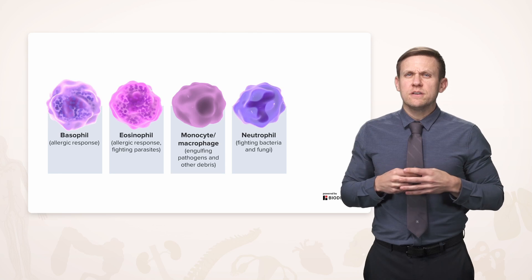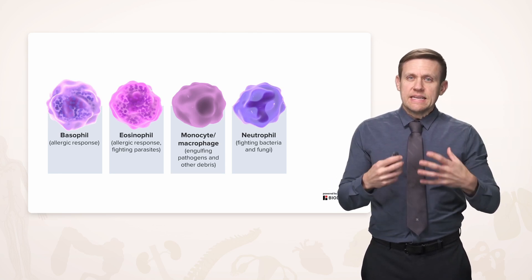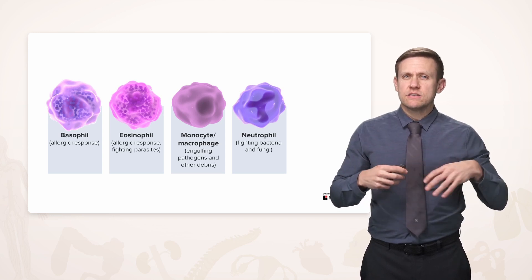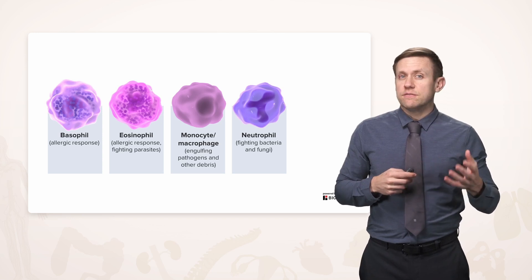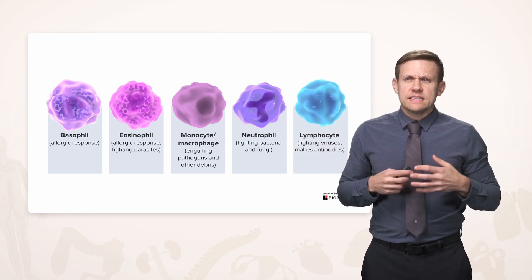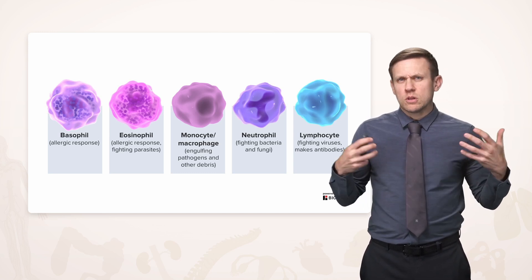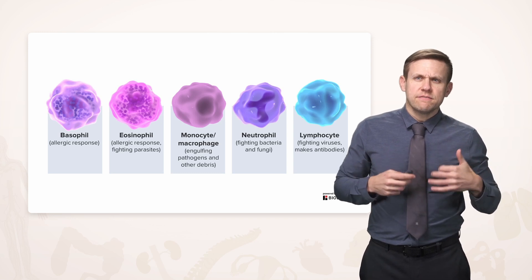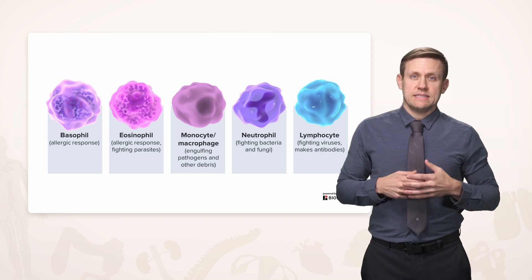We have neutrophils, which are the basic cell of the innate immune system. They're usually the first cell to respond to any sort of damage, and they're really good at fighting off bacteria and fungal organisms. Then there are lymphocytes, which are a little slower reacting than neutrophils but longer lasting. They're really good at fighting viruses, and certain types are the ones that actually make antibodies.